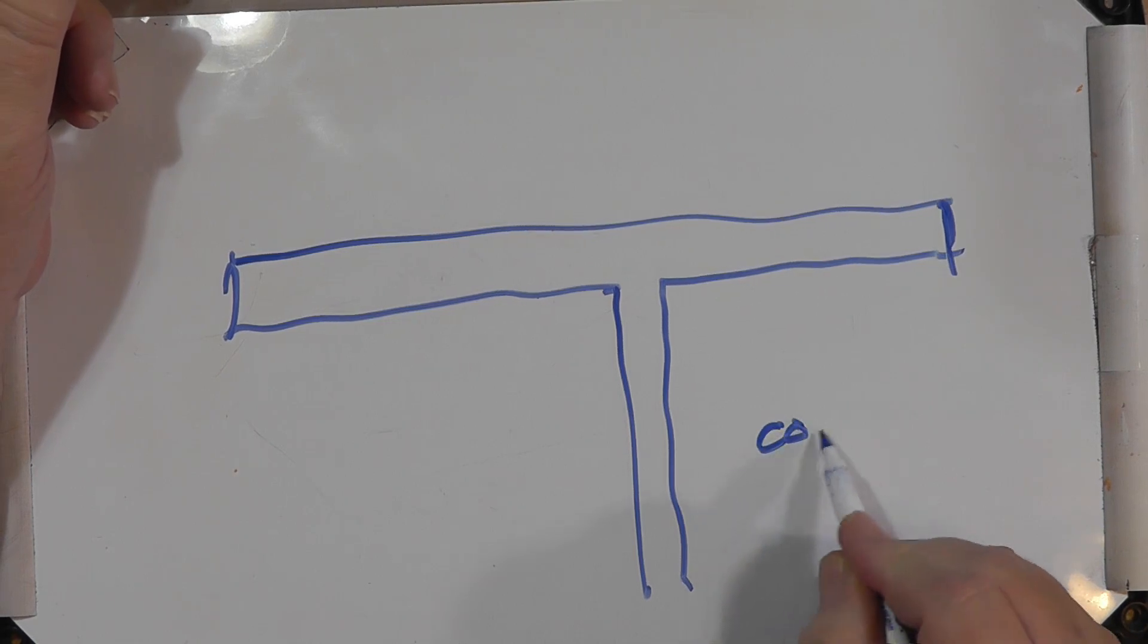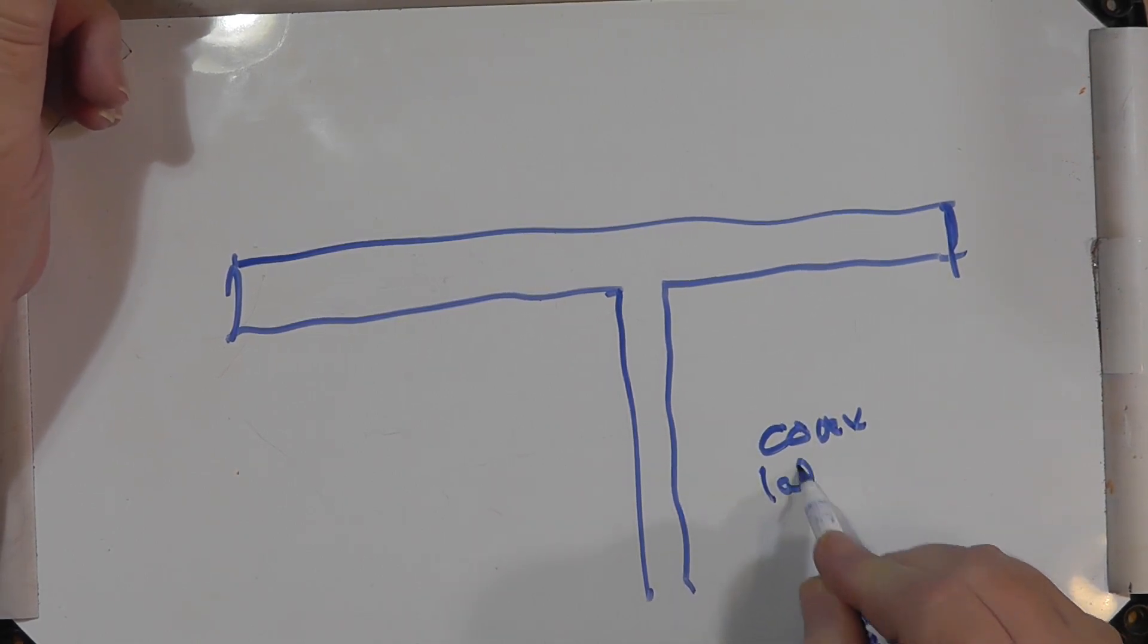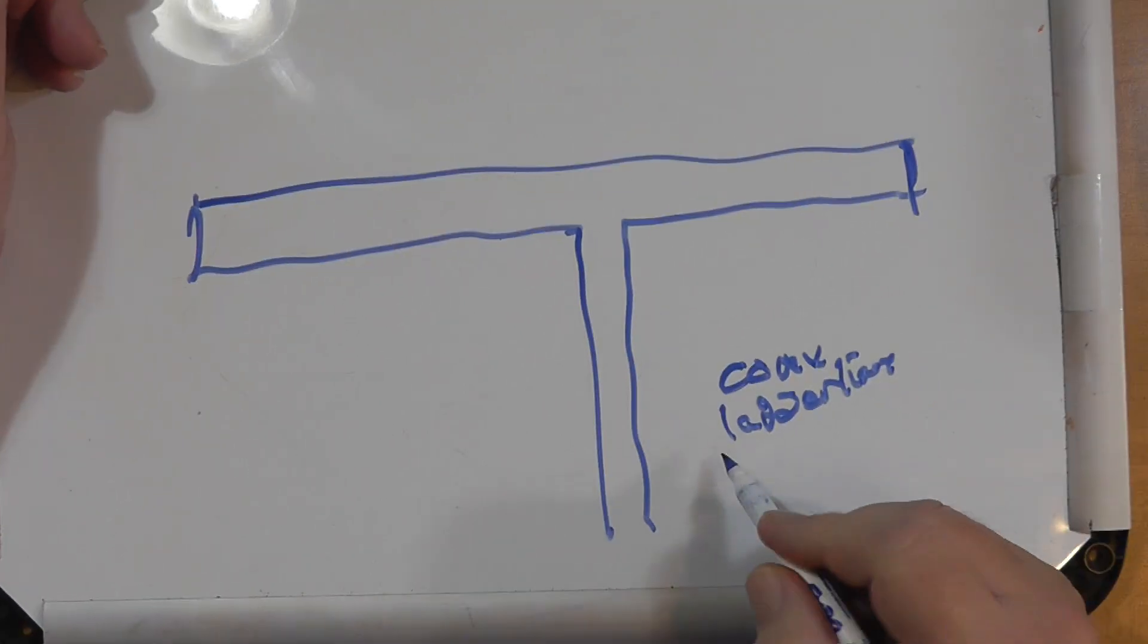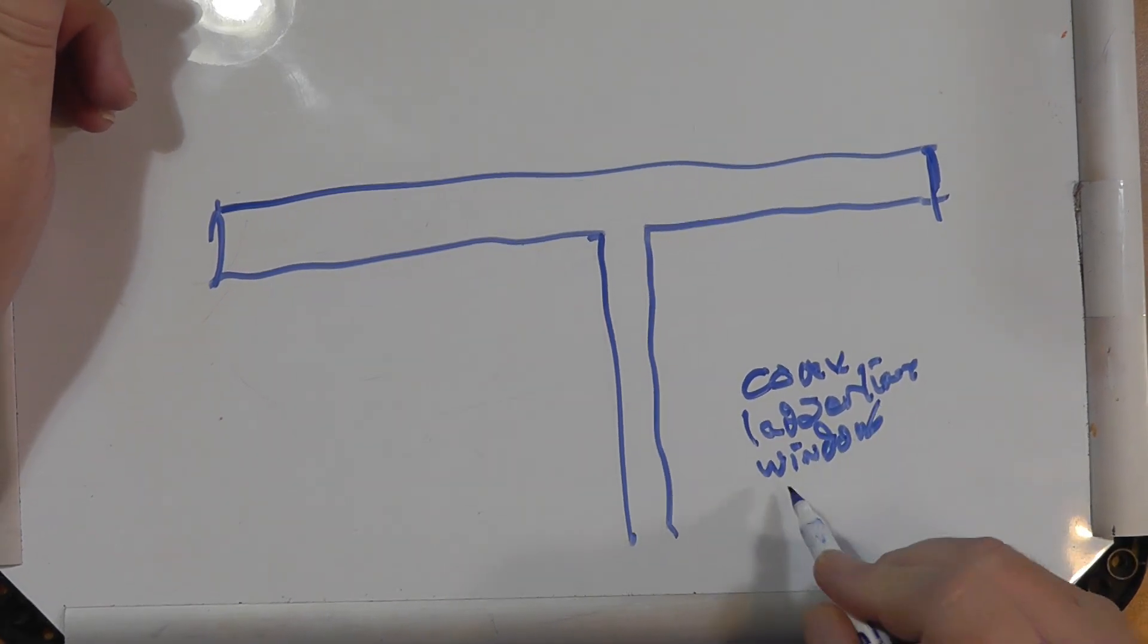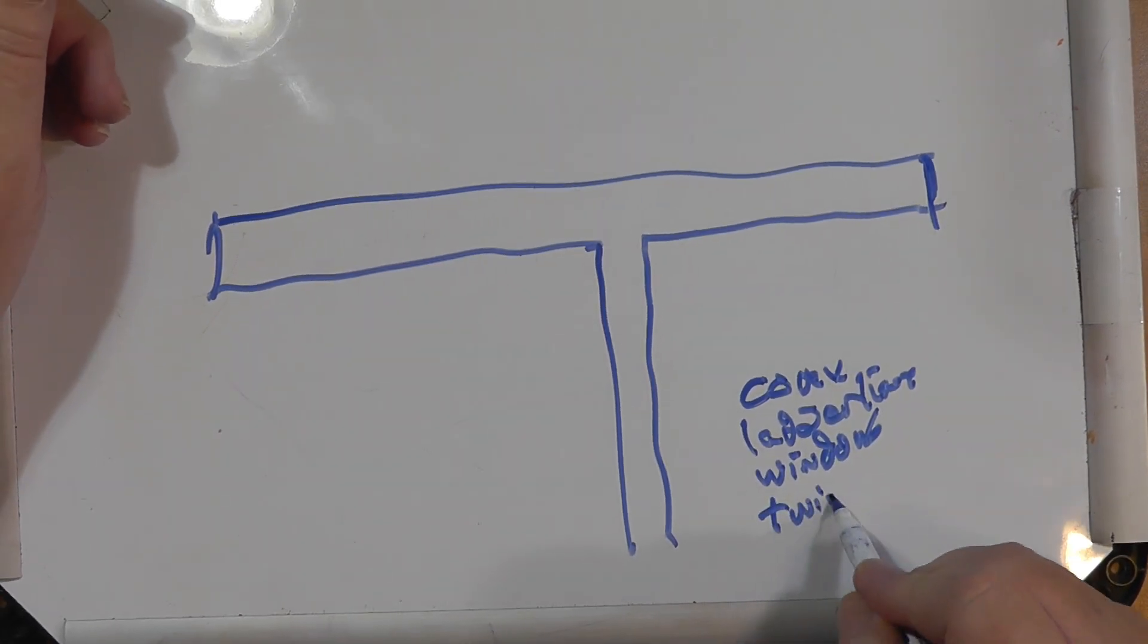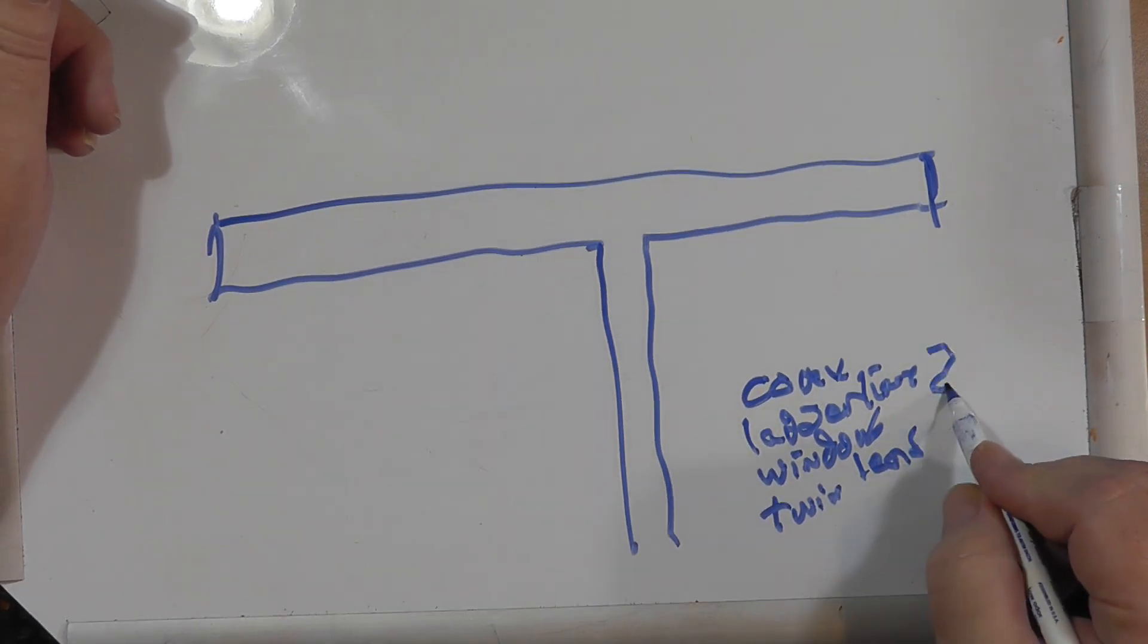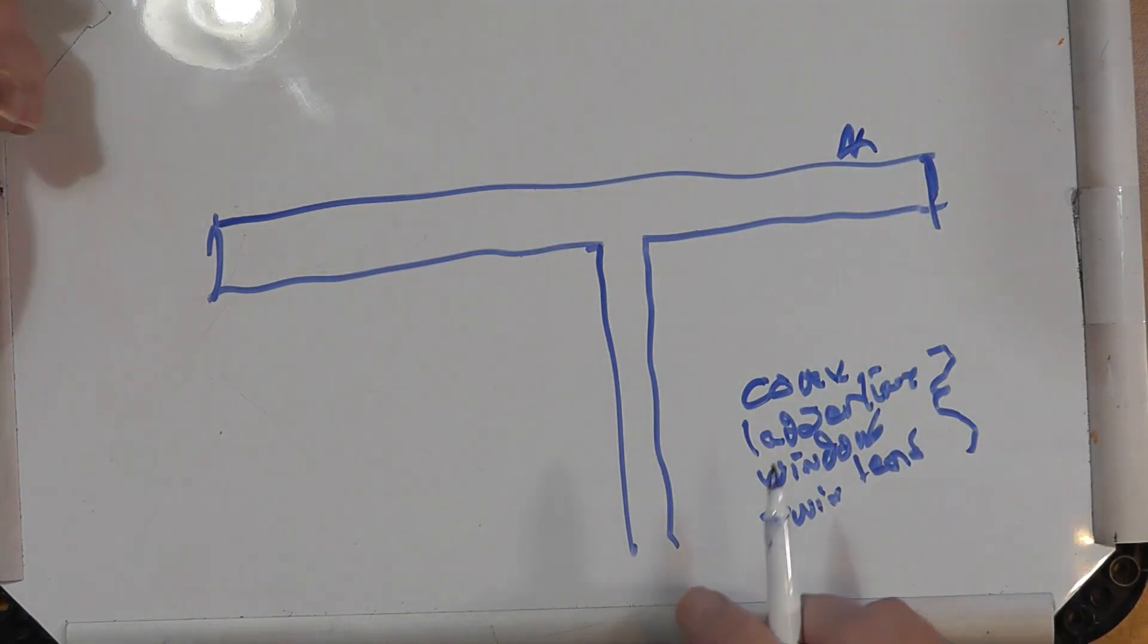It can be coax feeding it, which would be unbalanced. You can do ladder line, window line, and any of them can be used for this part up here.